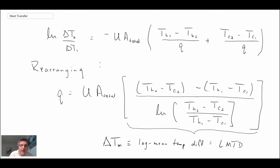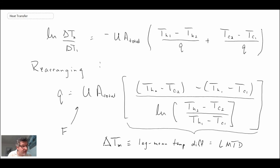We assumed a parallel flow double pipe heat exchanger. If you want to apply this to other types of heat exchangers, a correction factor F comes in from figures. In the next segment we'll look at how these temperatures map to different configurations — parallel or counter flow — and then solve problems using the LMTD method. It works well except when you don't know all four fluid stream temperatures; in that case you need iteration. There's also another technique, the effectiveness-NTU method, that we'll look at later.